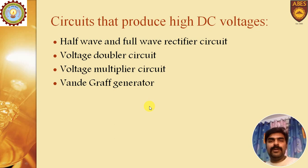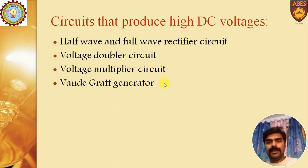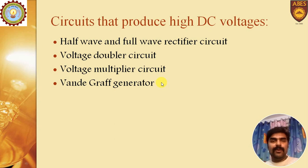The next question is: which circuits or methods produce high DC voltage? The methods include: half wave and full wave rectifier circuits, voltage doubler, voltage multiplier, and the Cockcroft-Walton generator. All these topics have already been discussed in the previous videos.